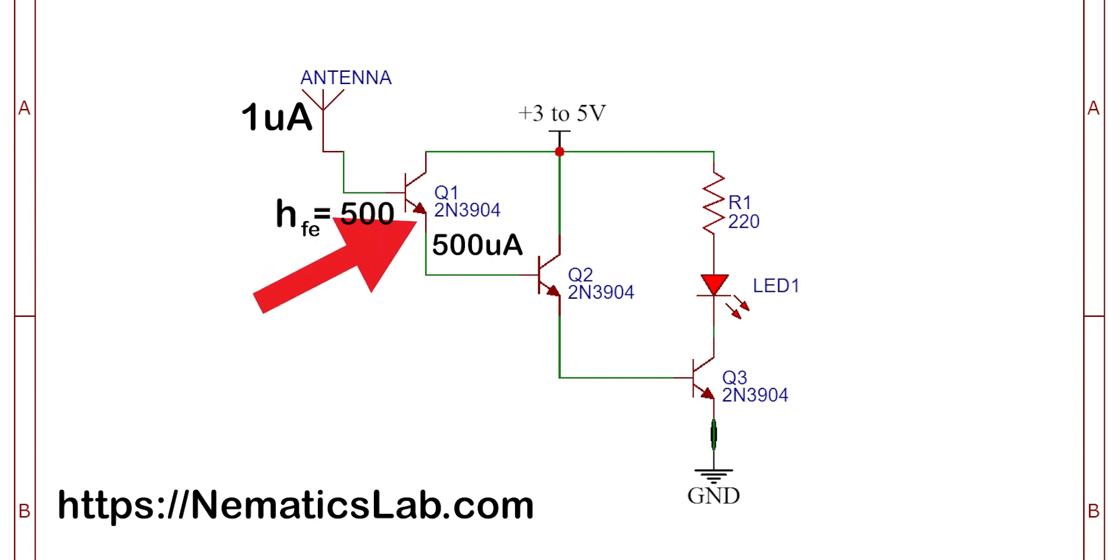And again since the emitter of the first transistor is connected to the base of second transistor, this 500 microampere gets again amplified by the HFE of second transistor. Let's say this time the HFE value is 100. So this 500 microamperes will get amplified by 100. So output current will be 5000 microamperes or to simplify 5 milliamperes.